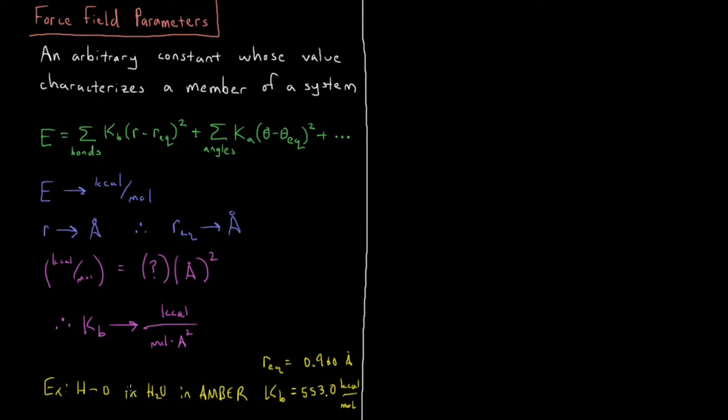Those are the two parameters for that particular bond with that particular force field. Now you have to specify that for all of the bonds for this force field, for all the angles, and then there are different parameters for torsions and electrostatics, van der Waals, etc. So you get a lot of parameters that you need to specify, and they're also different in various force fields as well.